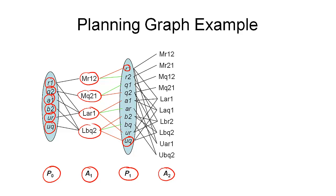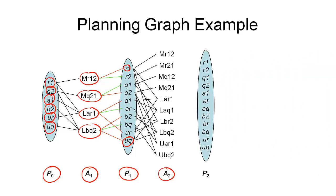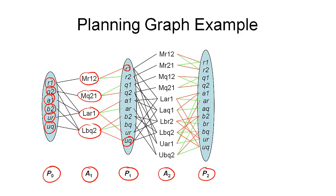With P1 and A2 defined, we can now identify the nodes in proposition layer P2. These are individual nodes — the whole set in proposition layer P2 — consisting of all nodes from P1 plus the positive effects of actions in A2. We add edges connecting propositions in P2 to actions as positive effects (green lines) and negative effects (red lines).